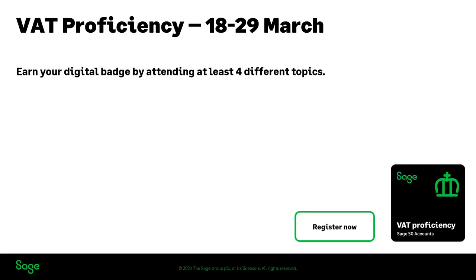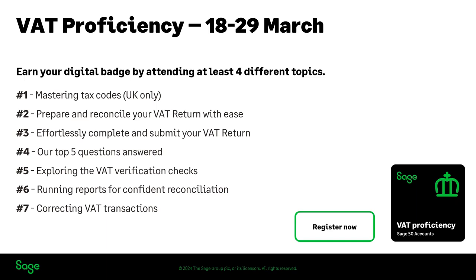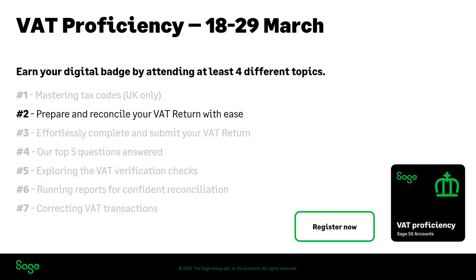A little bit of background to the VAT proficiency sessions. We started yesterday looking at tax codes and we're running them up to the end of next week. There are seven topics in total, and you can earn a digital badge by attending at least four of the different topics — it doesn't matter whether it's this week or next week, as long as you attend four or more of the live sessions. Recordings don't count. If you attend four or more, your digital badge will be sent out by around the 12th of April. Today is session two — preparing and reconciling your VAT return.